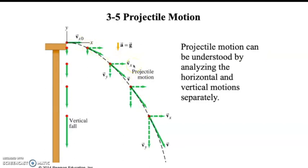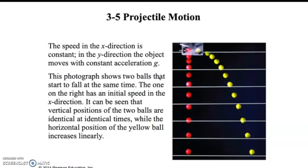The vertical velocity will increase as you go down due to the acceleration due to gravity. We know the acceleration in both x and y: in the y it's negative 9.8, and in the x it's zero. In the x our velocity stays constant, and in the y it will increase in the negative direction. Speed in the x direction is constant; in the y direction it moves with constant acceleration.